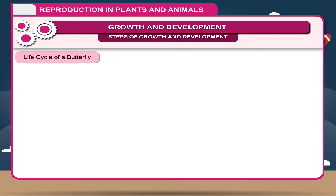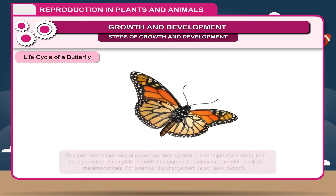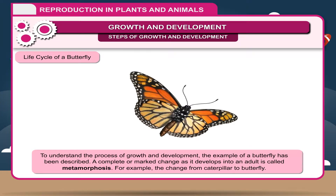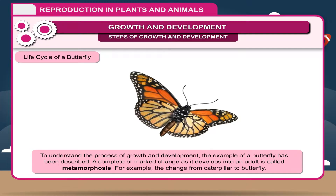Life Cycle of a Butterfly: To understand the process of growth and development, the example of a butterfly has been described. A complete or marked change as it develops into an adult is called metamorphosis. For example, the change from caterpillar to butterfly.